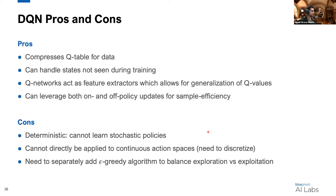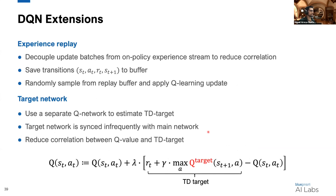One extension is experience replay, where you decouple your batch model updates from your experience stream. As you interact with the environment, you save your transitions as tuples of state, action, reward, and next state, and store them in a memory buffer. When you want to update your model, you randomly sample from that replay buffer and apply your Q-learning update. This helps a lot with training stability because it reduces the correlation between items in your batch.